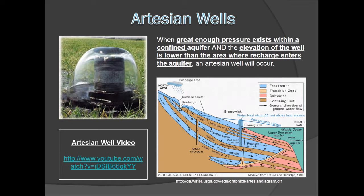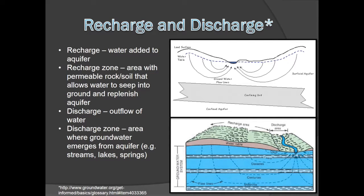Artesian wells occur as a result of a confined aquifer that is highly pressurized, but another condition must be satisfied: the elevation of the well must be lower than the elevation of the recharge area. Recharge occurs when water is added to the aquifer; the area where this occurs is called the recharge zone. Discharge is the exact opposite of recharge — water is removed from the aquifer. Discharge zones are often streams, lakes, and springs. Notice in the diagram how the groundwater flow lines go from the recharge zone to the discharge zone.